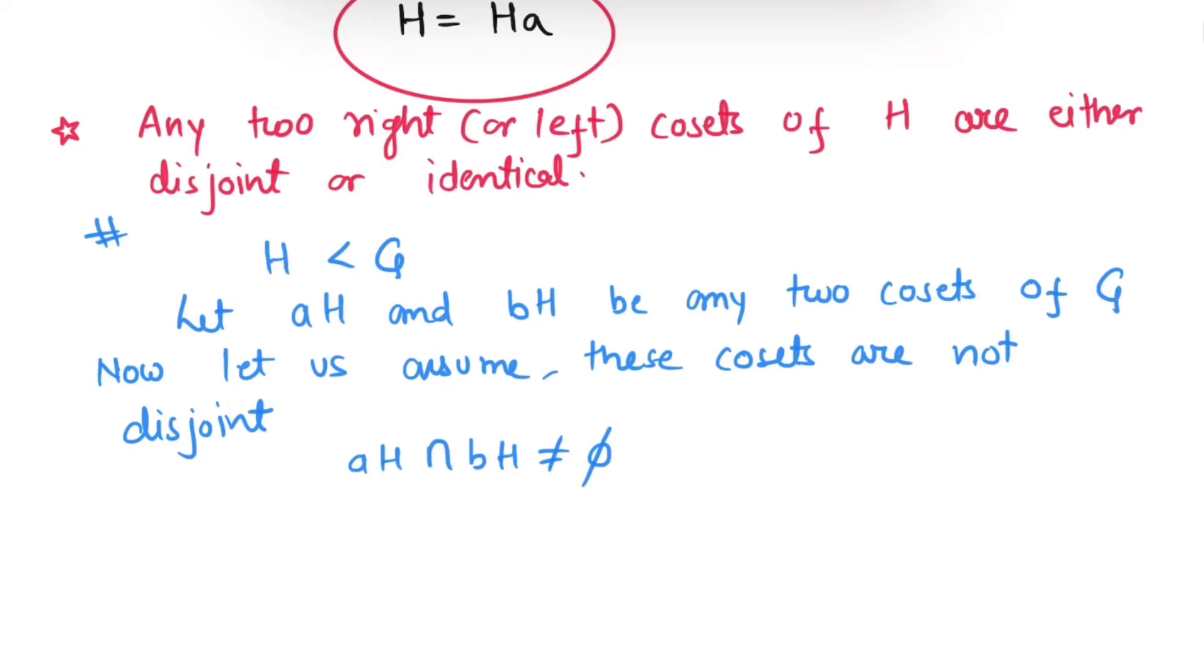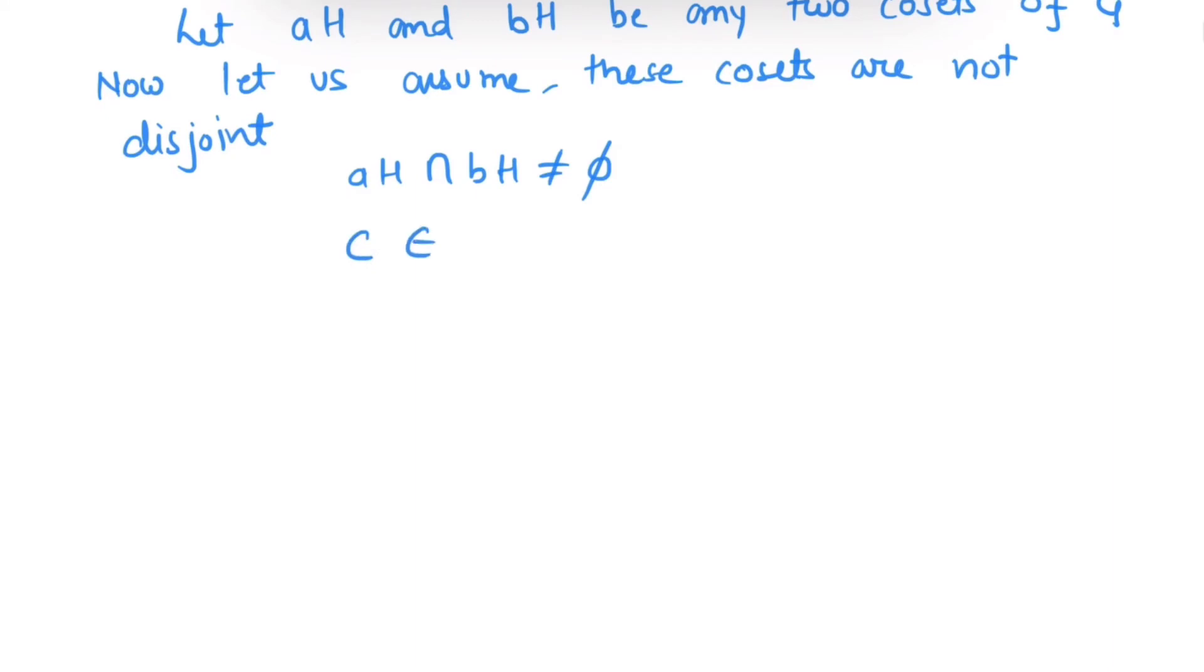That means they possess a common element. Say, that element is C. So C belongs to AH intersection BH. So this implies C belongs to AH and C also belongs to BH. Since C belongs to AH, we can write C as A into H₁ where H₁ is some element of H.